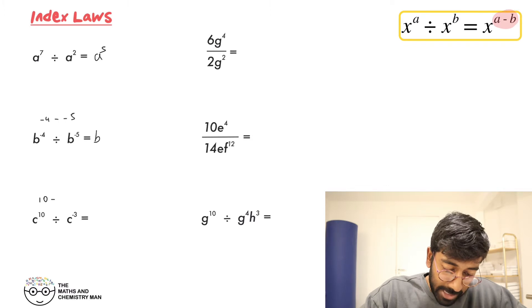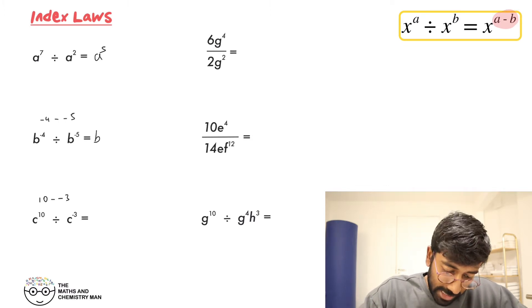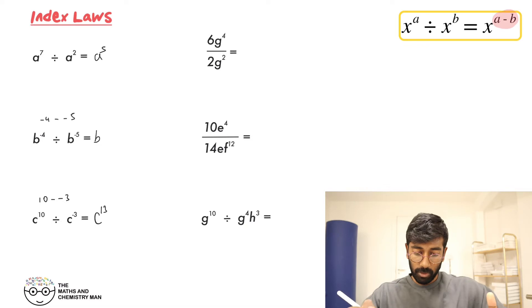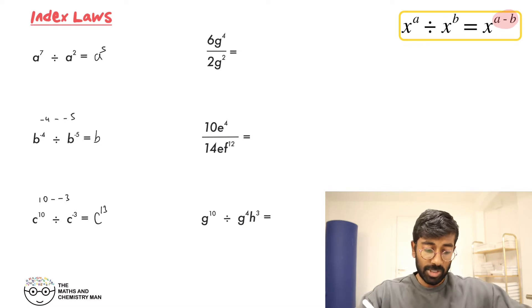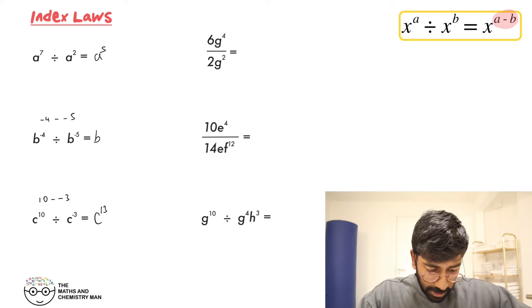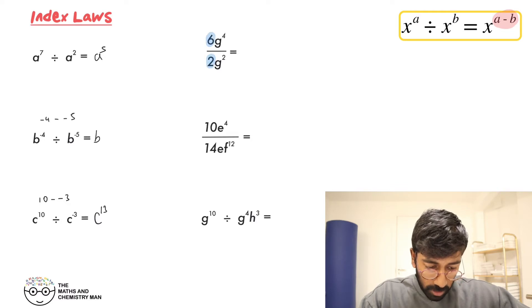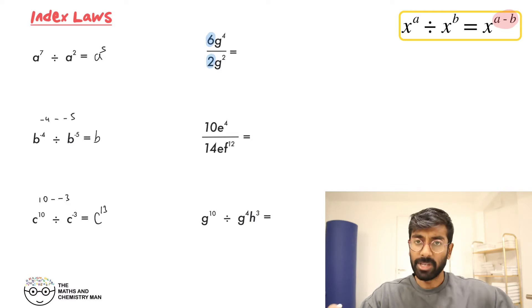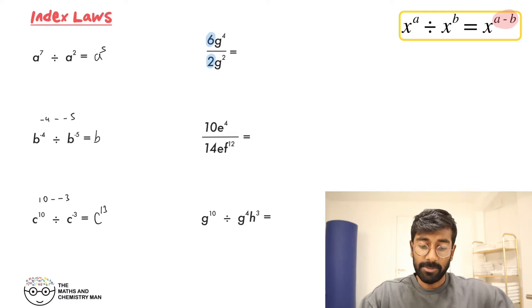Next one down — be careful — that would be 10 minus minus 3, which is 10 plus 3, so that's C to the power of 13. Now let's look at this one in fraction form. The 6 and the 2 are like ordinary numbers, so 6 divided by 2 is just 3.